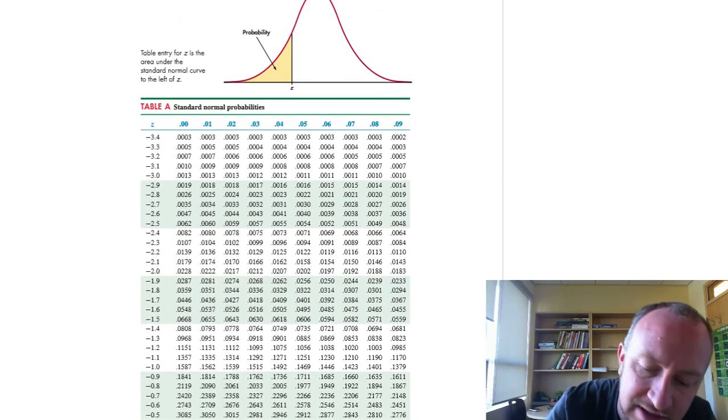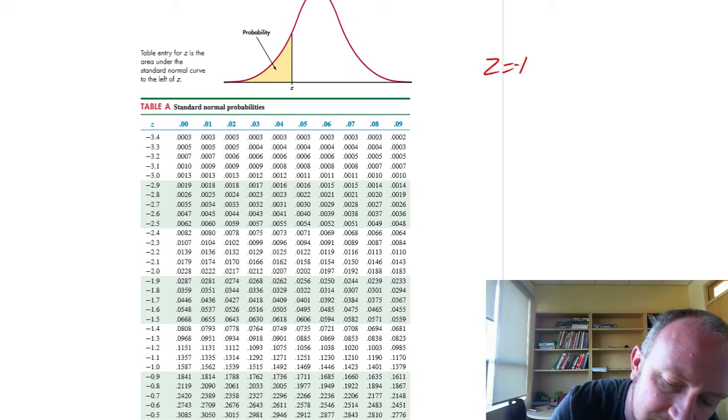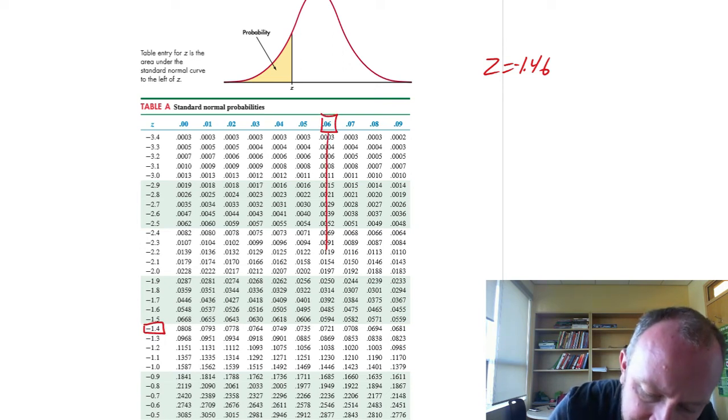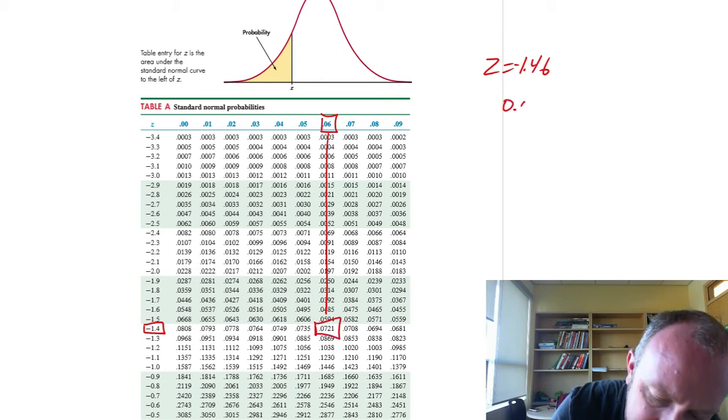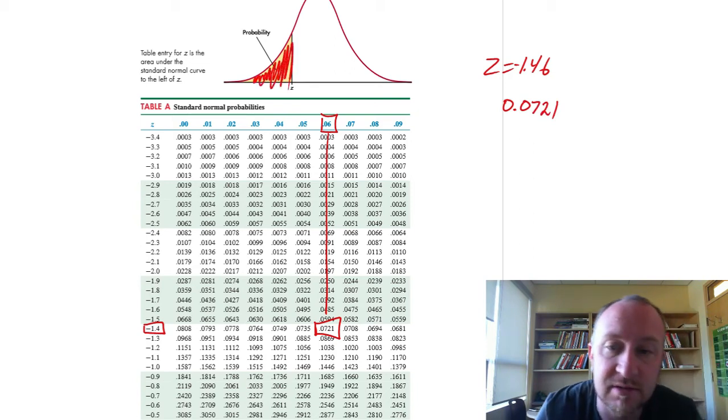And my z-value was negative 1.46. So here I find negative 1.4. And that second decimal place is 6. So where those come together. I have 0.0721 is that area tail in that lower tail of the distribution.